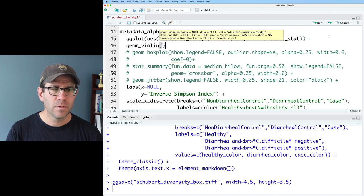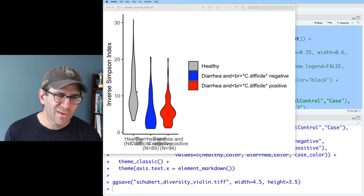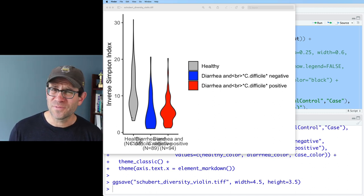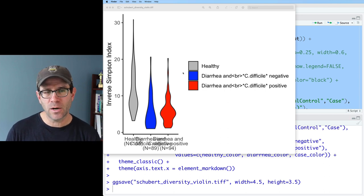So we'll do a geom_violin, open close parentheses, add that, voila, we have our violin plots. They look perhaps a little bit more like dulcimers than violins, but you know you get the idea that there's more points kind of where the plot where the shape is wider and fewer points up where it's more narrow.